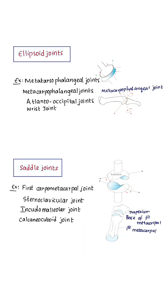Ellipsoid joints: the articular surfaces are elliptical — one is convex and another is concave. Examples include metatarsophalangeal joints, metacarpophalangeal joints, atlanto-occipital joints, and the wrist joint.